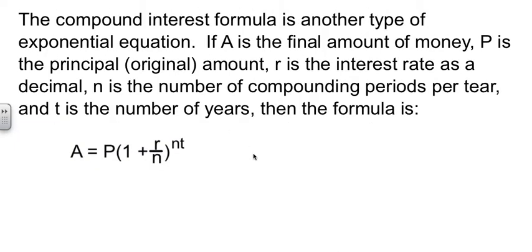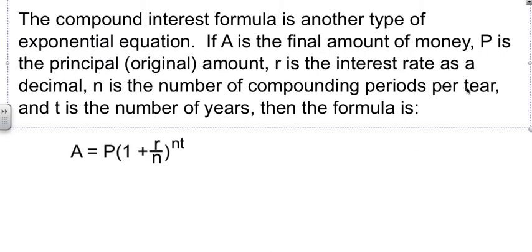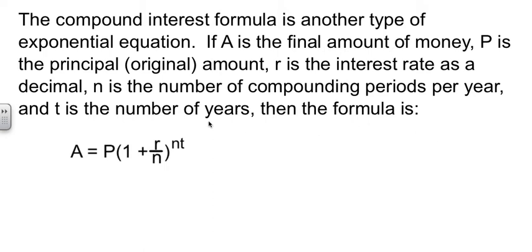Another kind that we have to deal with is the compound interest formula. And just like before, we're going to have a formula. And our formula is A equals P, the principal, times 1 plus R over N, the interest rate divided by the number of periods per year, not per tier. And T is the number of years.